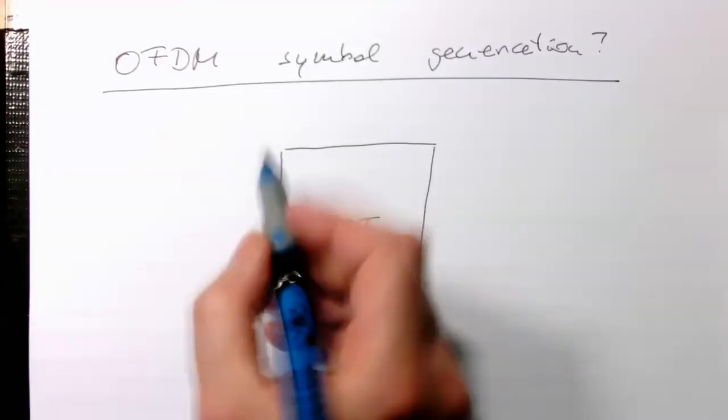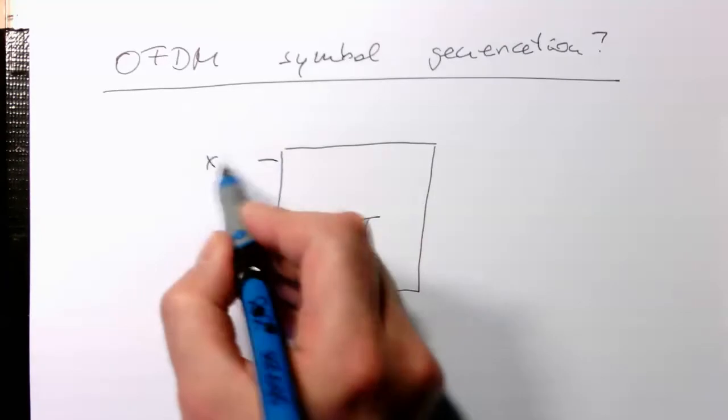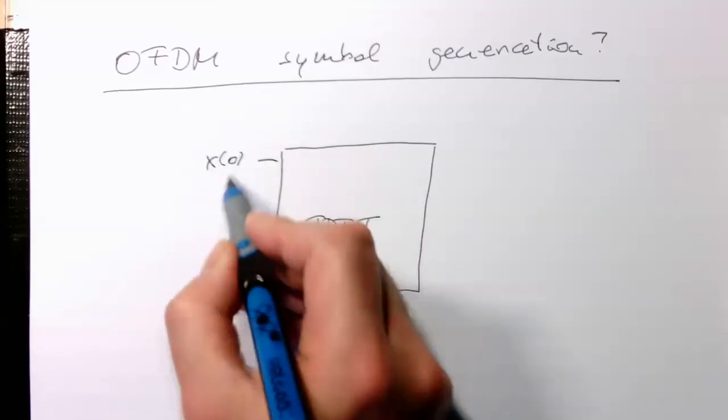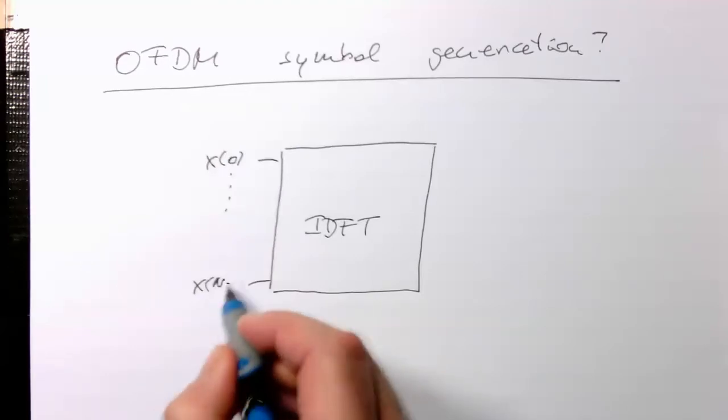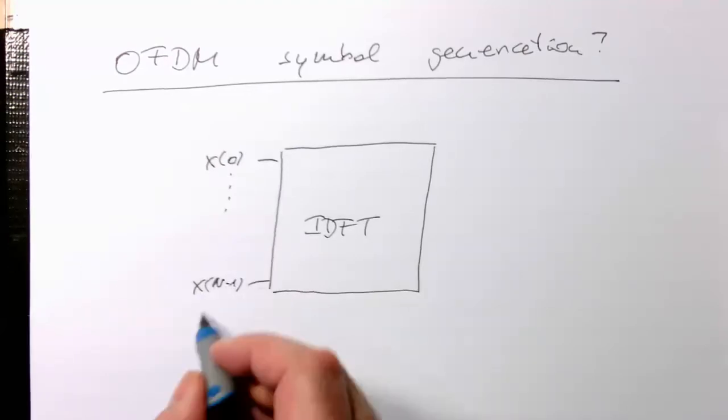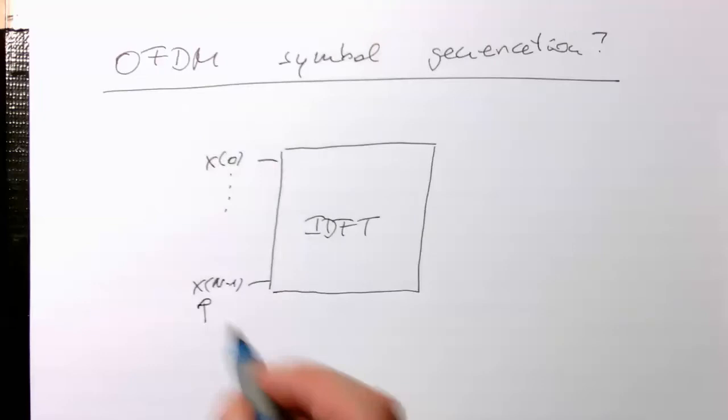And here we've got all these coefficients: x(0) up to x(n-1). These are all complex frequencies.